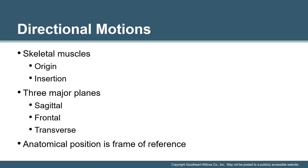We can have motion of bones through these planes to describe particular types of movement. Forward and backward motions take place within the sagittal plane. Sideways motion occurs within the directionality of the frontal plane. Anything that rotates occurs in the transverse plane.